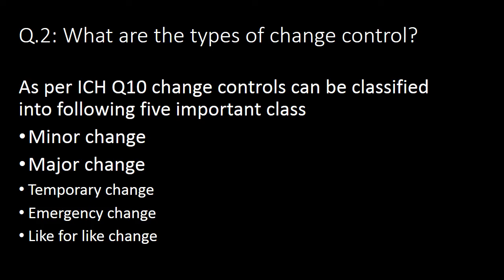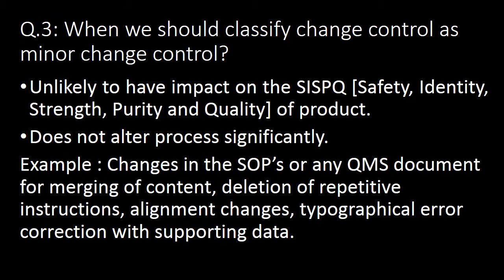The next important question: what are the types of change control? As per ICH Q10, change controls can be classified into five important classes. First is minor change, second is major change. Along with these two, three more terminologies are used in ICH Q10: temporary change, emergency change, and like-for-like change.